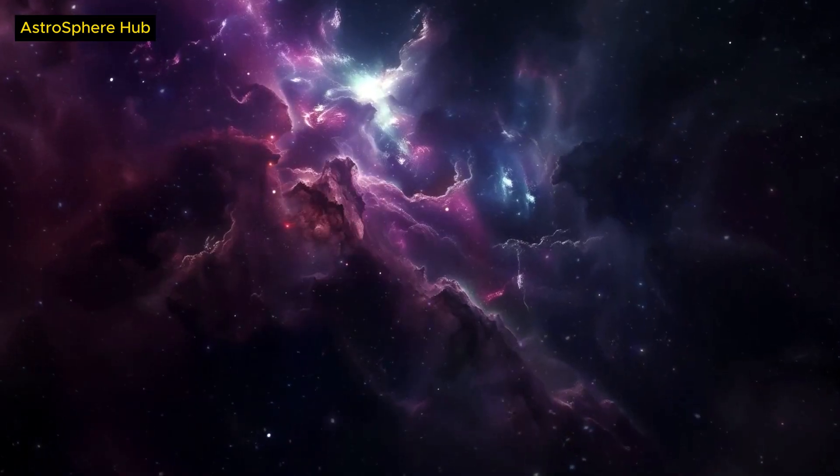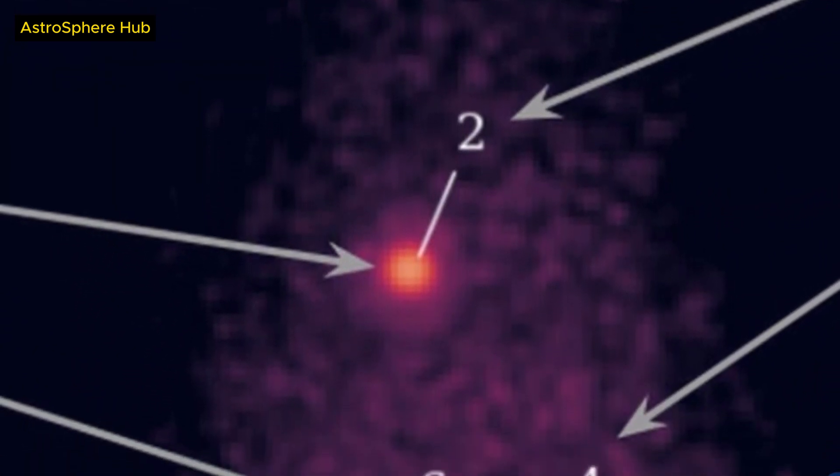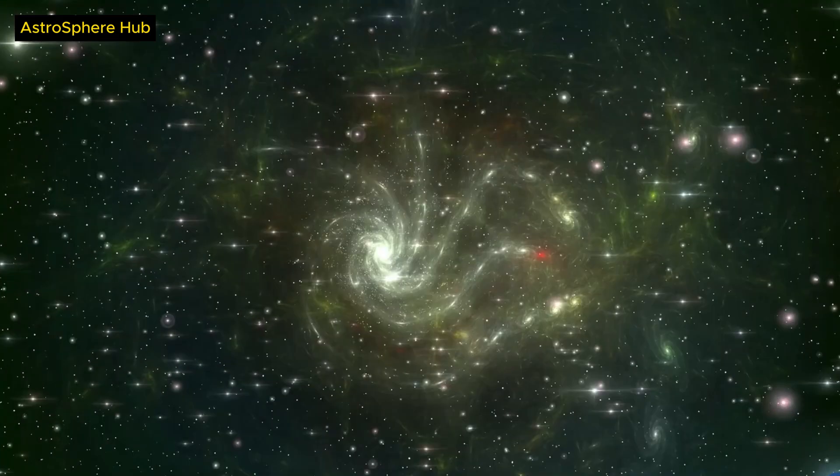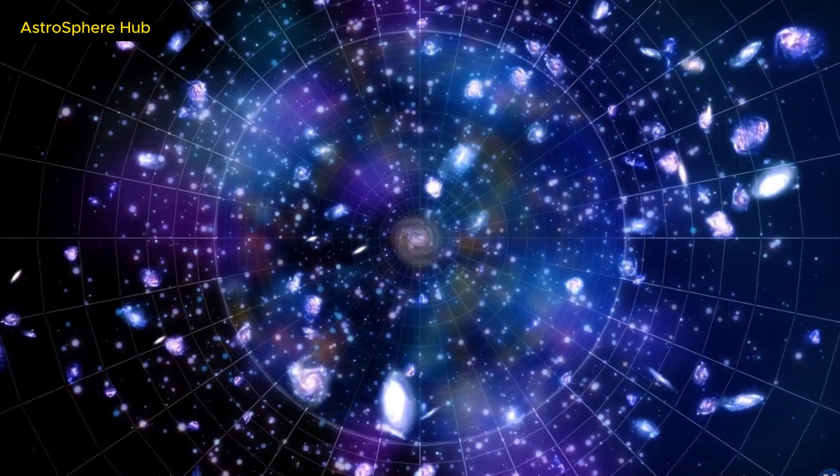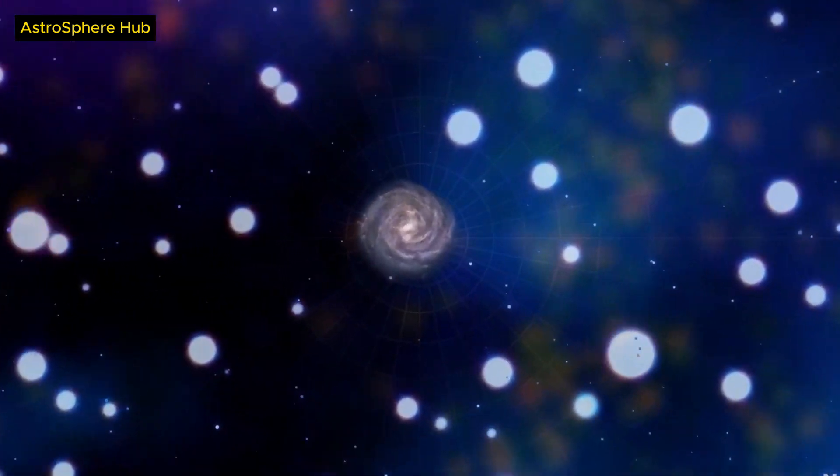It is also very young, with an age of about 10 million years. It is so bright that Webb was able to obtain its spectra, which are the fingerprints of light that reveal the chemical composition, temperature, and motion of the source.